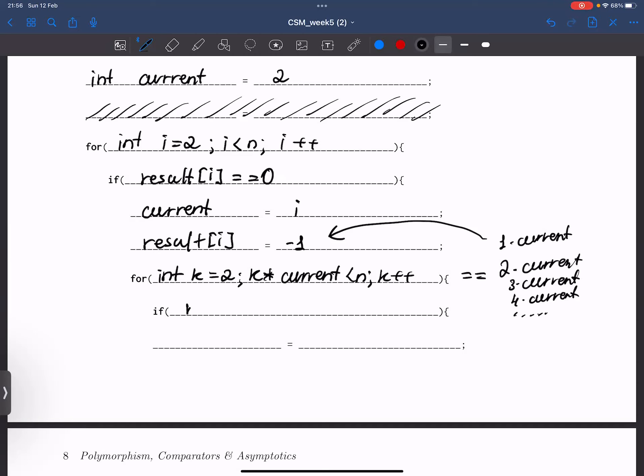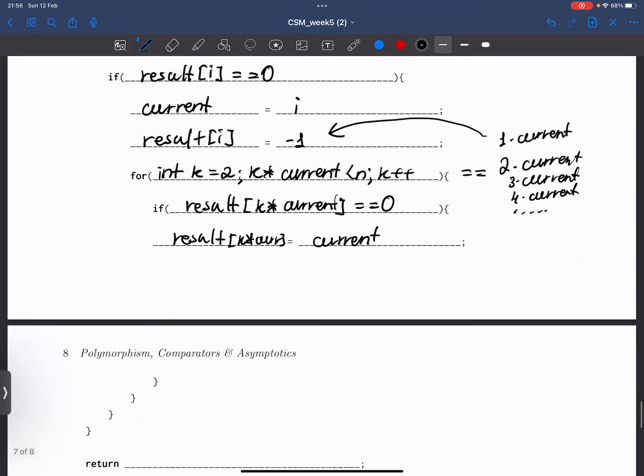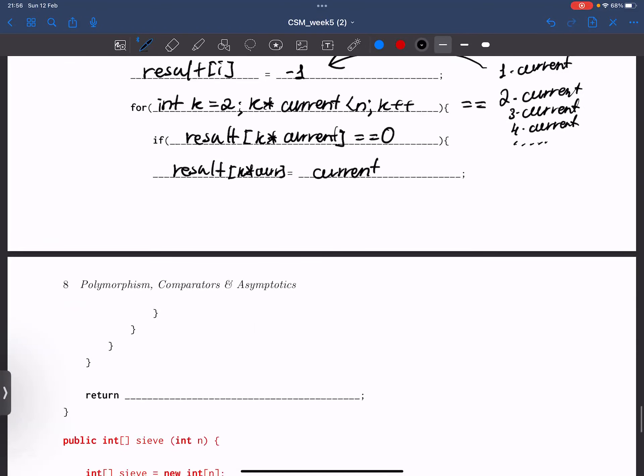And if result[k multiplied by current] is equal equal to 0, we're going to change k multiplied by current, let me actually just write current, but of course it means current. We're going to change the result at this index to our current number. And at the end, we need to return the resulting array.